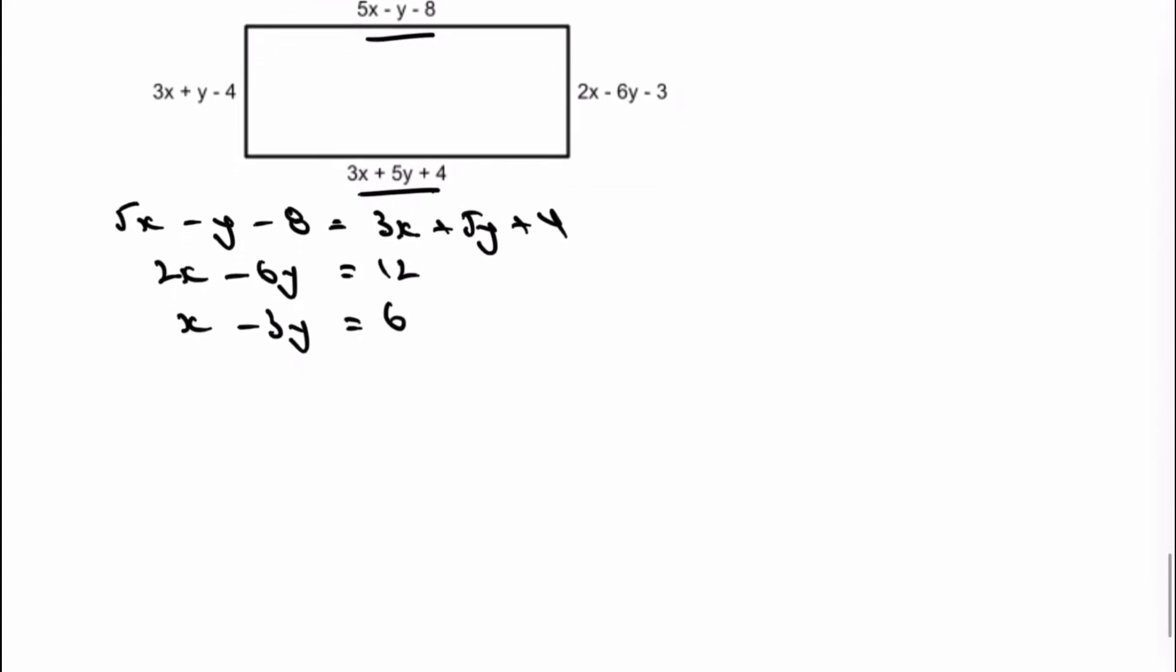So let's have a look then at the opposite lengths to each other, which is the left-hand side and the right-hand side. And what I've got with that is 3x plus y minus 4. And that equals 2x minus 6y minus 3. And again, I'm going to do exactly the same exercise. And I should end up with x plus 7y equals 1.